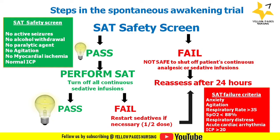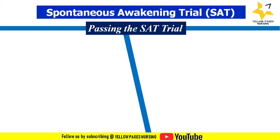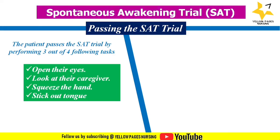When the patient doesn't fall under the SAT failure criteria, or if the patient responds to verbal stimuli, the patient passes. There are two ways in which the patient can pass the SAT trial. The first is by performing three out of four following tasks: open their eyes, look at the caregiver, squeeze the hand, or stick out their tongue — in general, following simple commands.